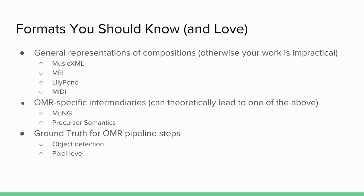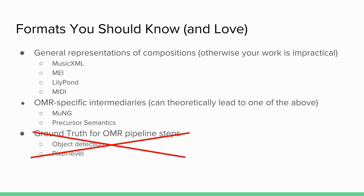You can also use some OMR-specific intermediate formats, because it's not always practical to go straight to MusicXML. It can be easier to get a model to output something from which you can then derive MusicXML by creating a script. And then there are formats for individual sub-steps — pixel masks, bounding box lists — but these are not OMR-specific and we don't need to discuss them.